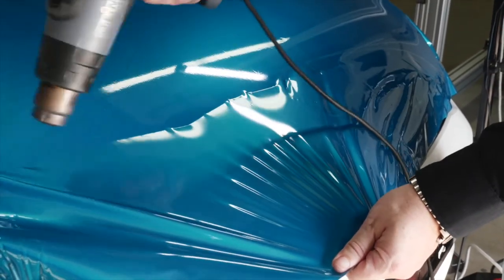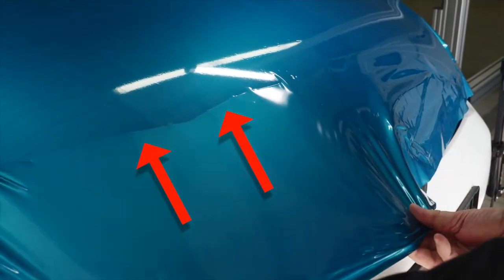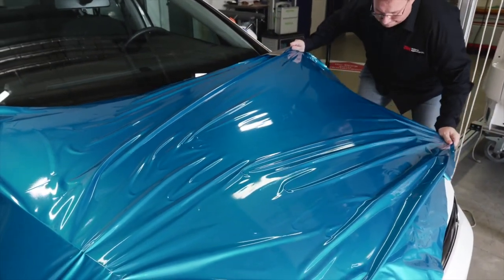There is a risk when squeegeeing of creating adhesive flow lines at the point between the fixed film and the repositioned film. Cold stretching of the film can lead to adhesive clumping.